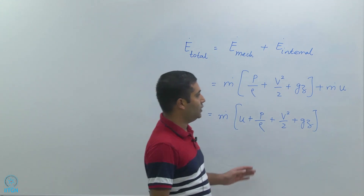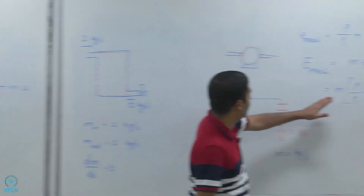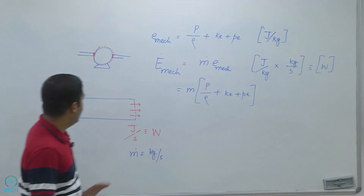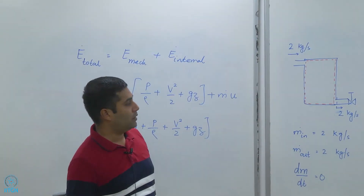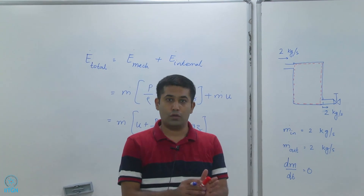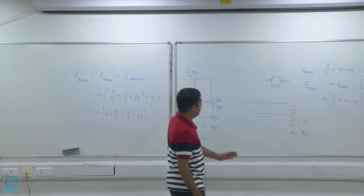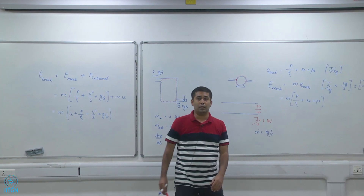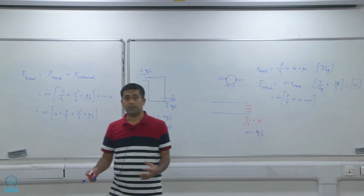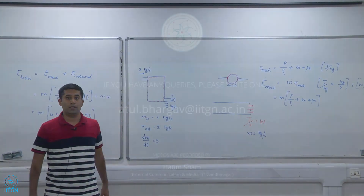So this is the mechanical energy crossing this boundary, and if I add the internal energy inside the brackets I get the total energy — or total flow energy — crossing this boundary per unit time. That is how we account for energy crossing into and out of a system.